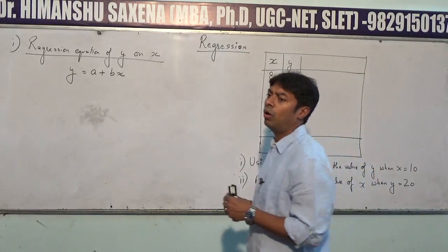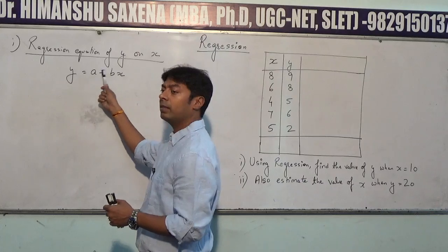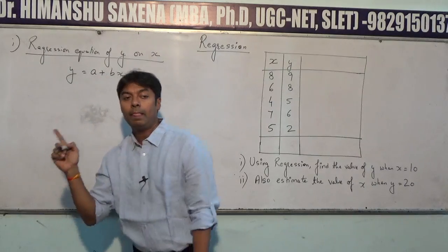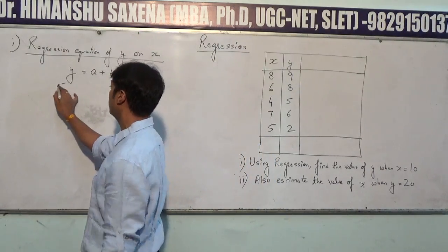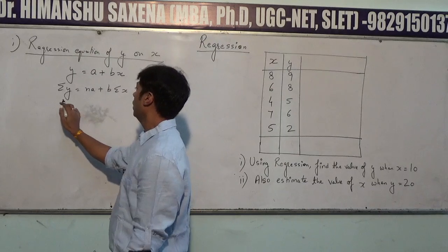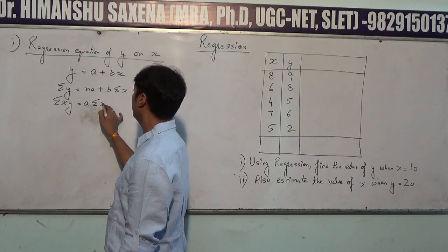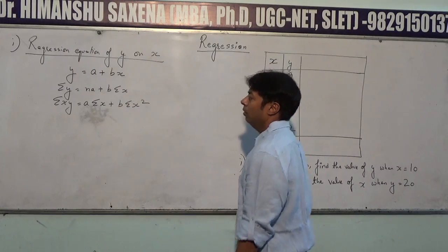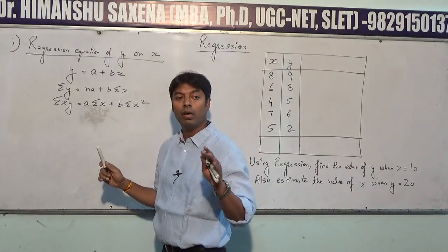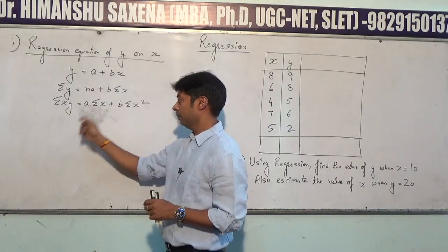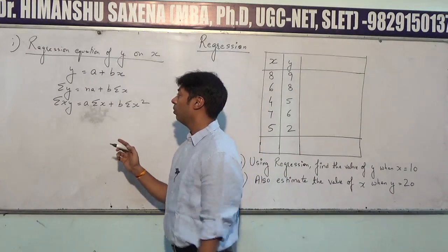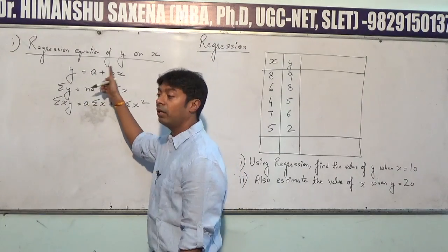The regression equation of y on x is: y = a + bx. This is also called the equation of a straight line, or the trend line. Here a and b are the two constants. Their values will be determined with the help of two normal equations: summation y = na + b·summation x, and summation xy = a·summation x + b·summation x².